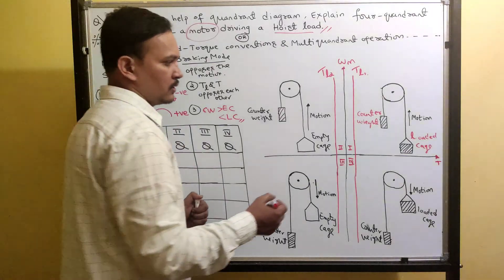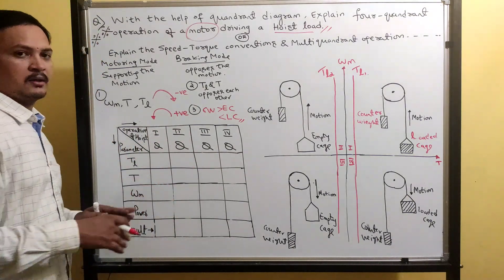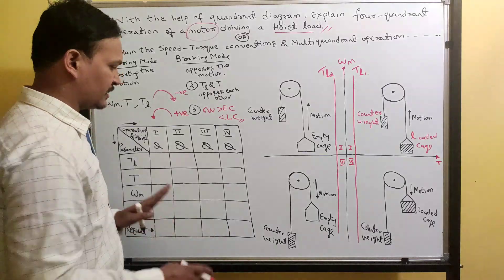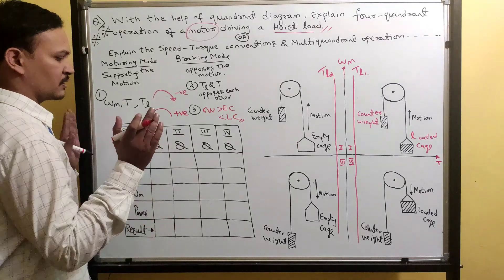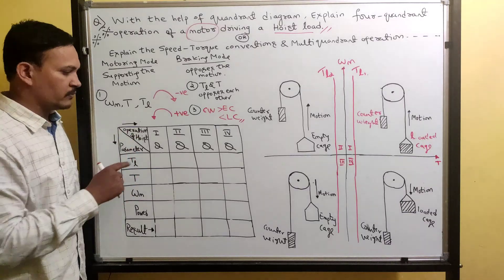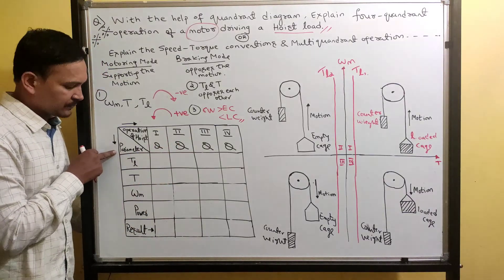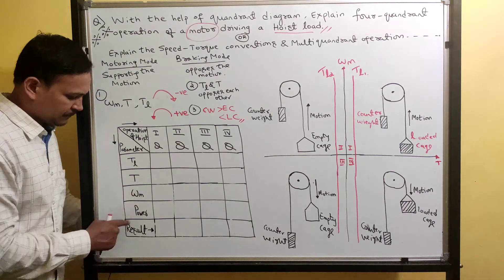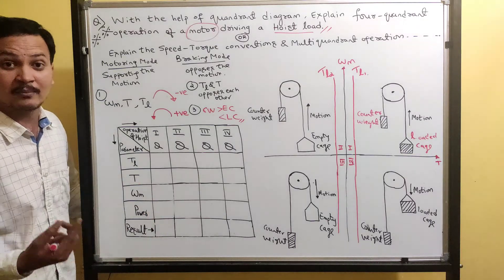In the first quadrant, the motion is upward — the loaded cage moves from bottom to top. The speed direction assists this motion. Since counterweight is less than loaded cage, motor torque is required to support this motion. Motor torque is in the same direction as speed. Load torque is opposite to motor torque. Load torque TL is clockwise, so negative. Motor torque is anti-clockwise, so positive. Speed is anti-clockwise, so positive. Power equals torque times omega: positive times positive is positive. Positive power means motoring mode — specifically, forward motoring.